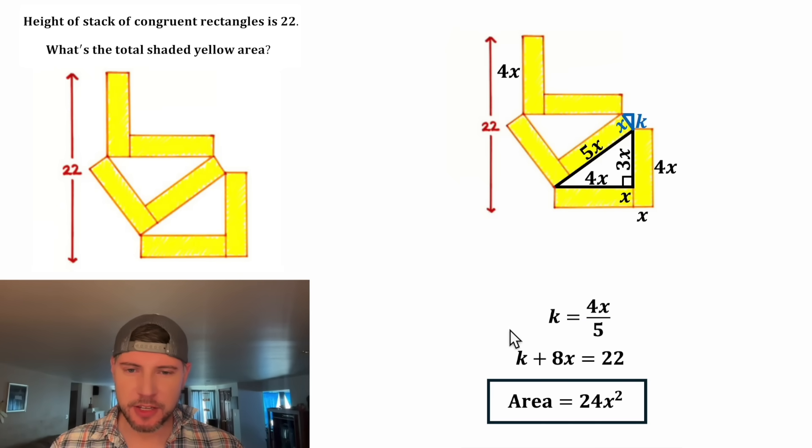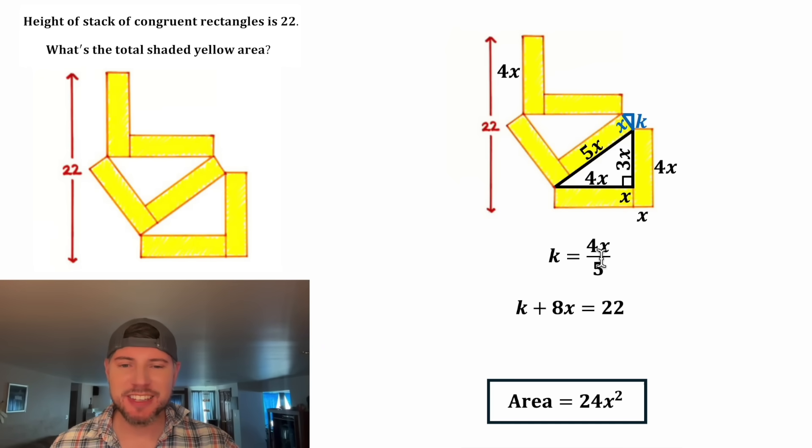Now we're done with this and let's bring these up here. Since K is equal to 4X over 5, in the place of this K, we can substitute 4X over 5. And then I don't really like fractions, so let's get rid of this denominator. Let's multiply both sides of the equation by 5. This 5 is going to distribute to each of these terms.